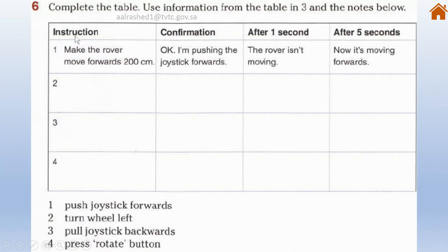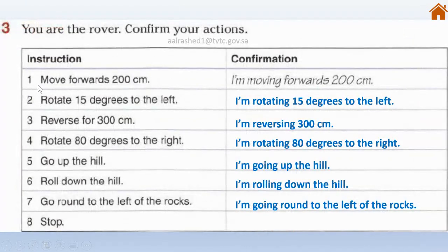To make instructions, put the verb at the beginning without a subject. For the confirmation, repeat the instruction using present continuous with a subject and helping verb, so the controller understands the instruction was received. After one second, use the negative form if nothing is happening. After five seconds, update what actually happened. Refer to exercise three for the information needed to complete this table.